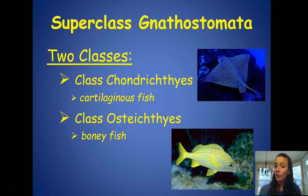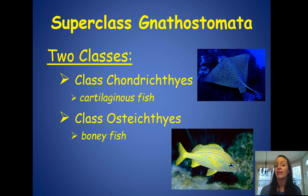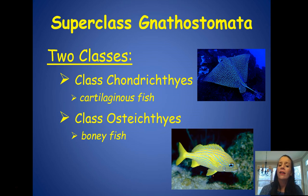There are two major classes in superclass Gnathostomata: class Chondrichthyes, the cartilage fish such as rays, and class Osteichthyes, the bony fish. The next video will get into the details of both of those classes.